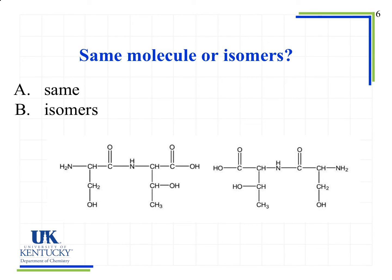Here's another example — these are actually the same molecule. We always start from the N-terminus on both molecules to compare. On the molecule on the left I see an N-terminus with a CH with a CH2OH group attached. On the molecule on the right I also see CH with CH2OH, then a carbonyl group on both, then NH on both, then CH with a CHOH and a CH3, then a C double bond O and an OH group. So these are the same molecule, just drawn in a different way.